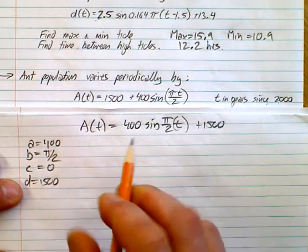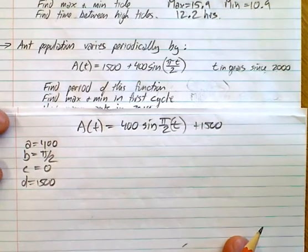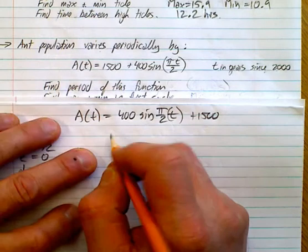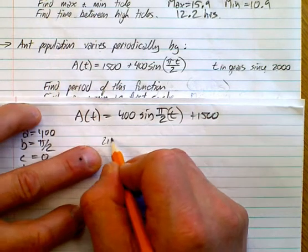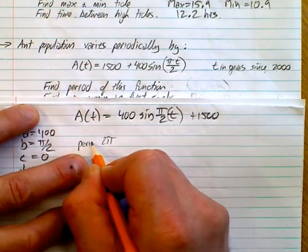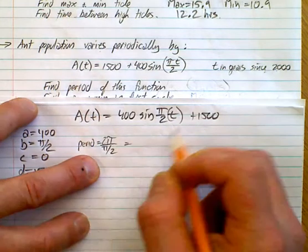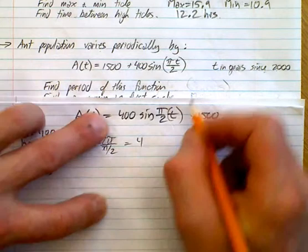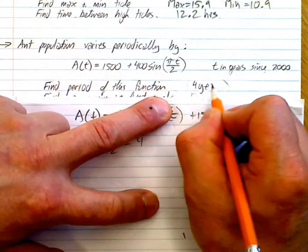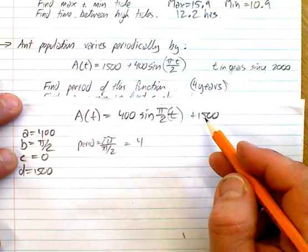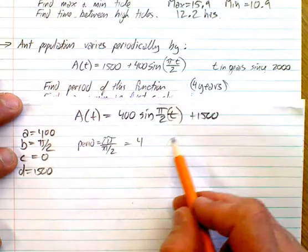Now let's see if we can interpret the questions that they ask here. So find the period of this function. The period, so B is equal to your period. So it's 2 pi. And so your period is equal to 2 pi over B, which is pi over 2. So in this case, it's going to be 4. So it takes 4 years for this thing to be cyclic, to go from, to do one full cycle.